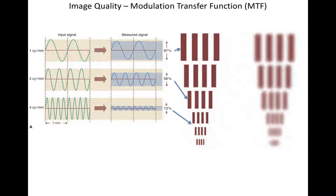This behavior is usually described as a modulation transfer function, which describes the behavior of the whole imaging system. Here's an example of a bar pattern where we have a spatial frequency in cycles per millimeter in the plane of the bar pattern, and that spatial frequency increases as you go farther down the pattern — more cycles per millimeter lower down than higher up.